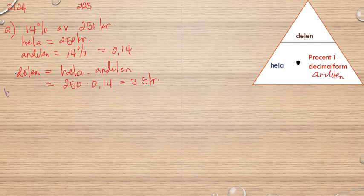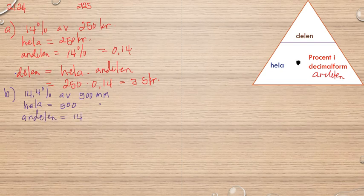Let's look at B. So here I have 14.4% of 500 millimeters. So I have hela (the whole).